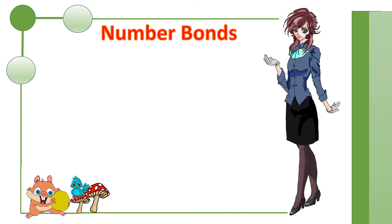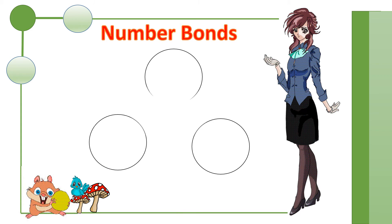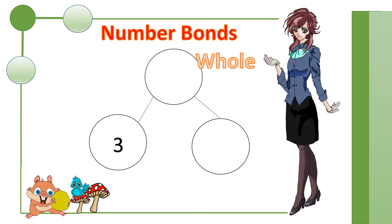Now we are going to draw a number bond diagram. Similar to our previous examples, we draw three circles. Make any one of the circles as the whole. Let's make the top circle as the whole. Draw two lines to link the circle to the other two circles. Remember, the circle which represents the whole must link to all the other circles. It should not link to itself. The circles that represent the parts must link to the whole circle. They should not link to other circles which also represent parts. Let's insert some values. Let's put three in one of the circles which is a part, and nine which is the whole. So what is the value of the other circle? That would be nine minus three, which equals six. So the value is six.